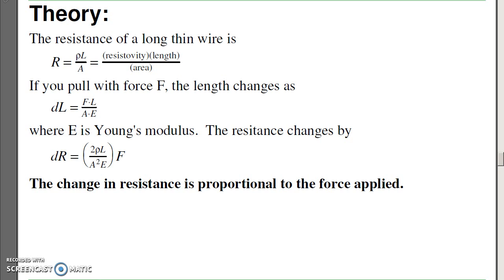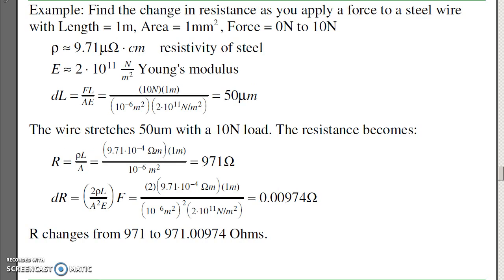The theory behind a strain gauge is if I have a long piece of wire, the resistance is the resistivity times length over area. If I pull on the wire, the length is going to increase by Young's modulus, and the area will decrease from conservation of mass. So the change in length varies with the force. The change in resistance also varies with the force. The net result is the change in resistance is proportional to the force applied. For example, if I have a steel wire that's 1 meter long, area's 1 square millimeter, and apply 10 newton's force, the length is going to change by 50 microns. The resistance is going to change. Not by a lot, but it does change.